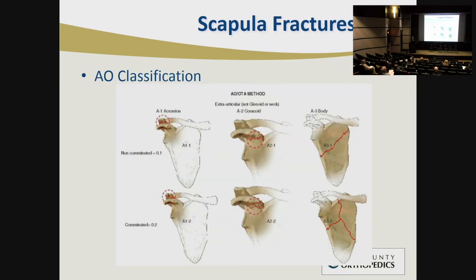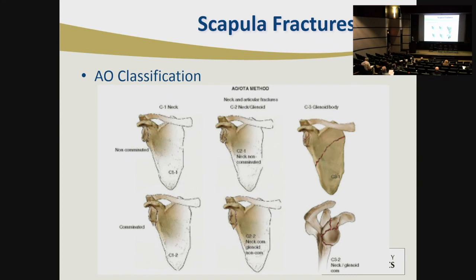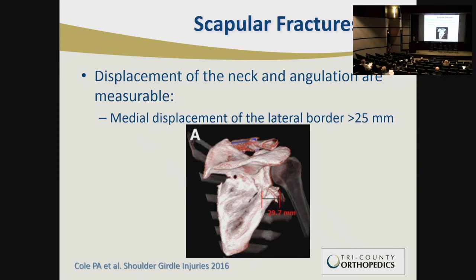The AO classification looks at extra-articular fractures — acromion, coracoid, and body — that do not involve the glenoid; partial articular fractures where a portion of the glenoid is stable and attached to the rest of the body; and neck and articular fractures. These are more for academic purposes. The essential indications for surgery have evolved, because there have been no great established indications, toward discussing stability and displacement.